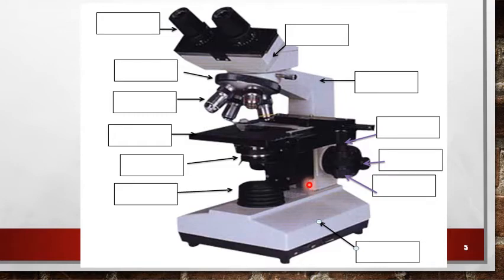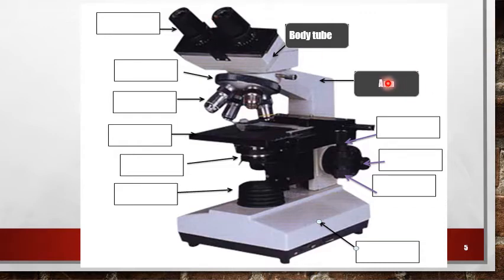The body of the microscope includes body tube, which contains mirrors and prisms that transmit the image from the objective lens to the ocular lens.